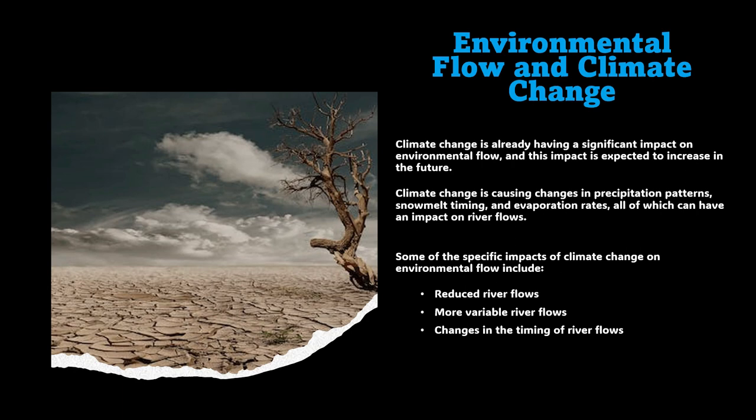These changes in environmental flow are having a negative impact on river ecosystems. Fish populations are declining and some species are even becoming extinct. Wetlands are drying up and water quality is declining. These impacts are already being felt and are expected to get worse in the future. One approach to address this is the restoration of wetlands, which help to store water and release it slowly, helping to maintain natural flow regimes.